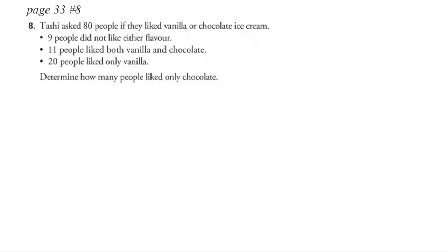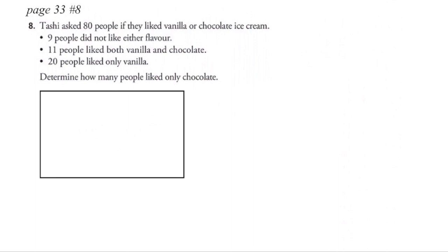A question from the textbook illustrates that problems won't always say 'draw a Venn diagram,' but we know to always draw one to organize information. We start with a rectangle for the universal set. In this case, we're surveying 80 people — that's our universal set. Nine people do not like either flavor, so they go in the complement. Eleven people like both flavors, meaning we'll have intersecting circles.